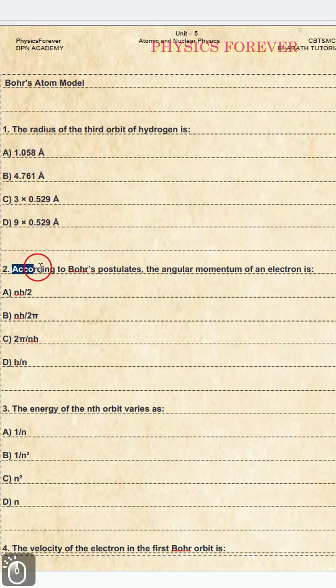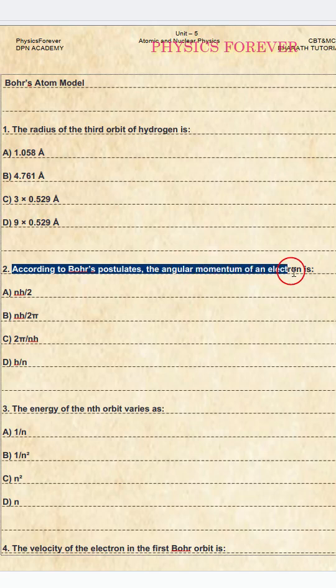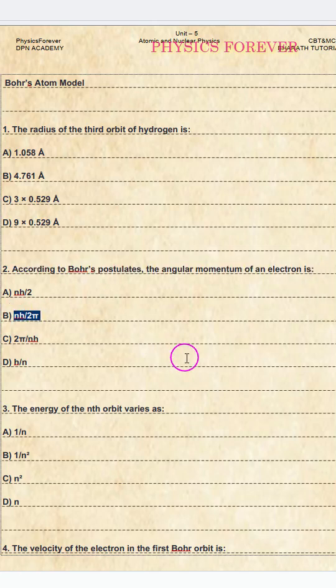Question number two: According to Bohr's postulates, the angular momentum of an electron is? The correct option is B, nh by 2π.